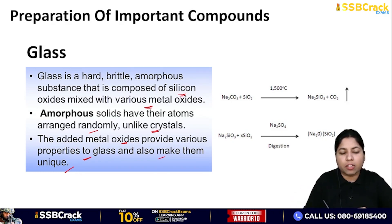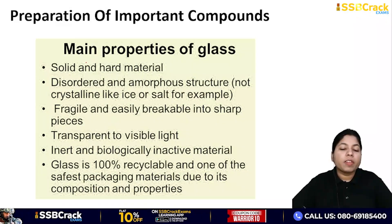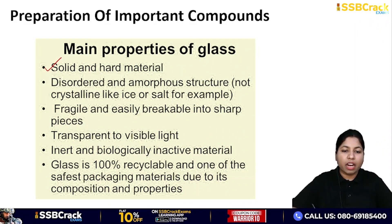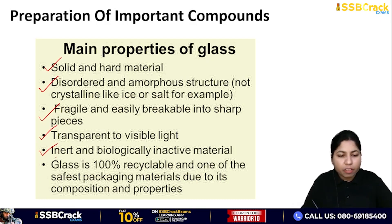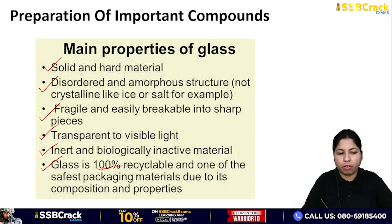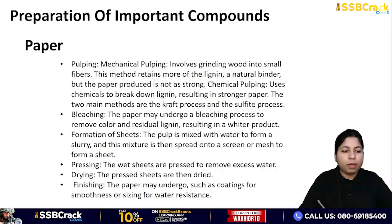The main properties of glass are: it is solid and hard, has a disordered and amorphous structure, is fragile and easily breakable into sharp pieces, transparent to visible light, inert and biologically inactive. Glass is 100% recyclable.